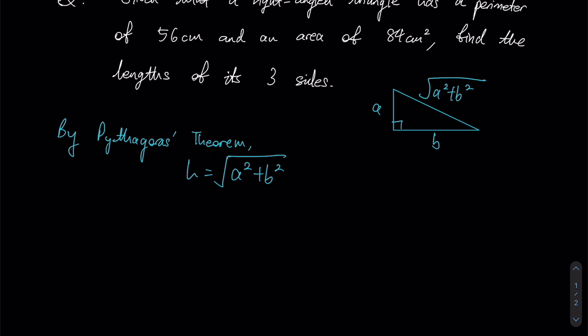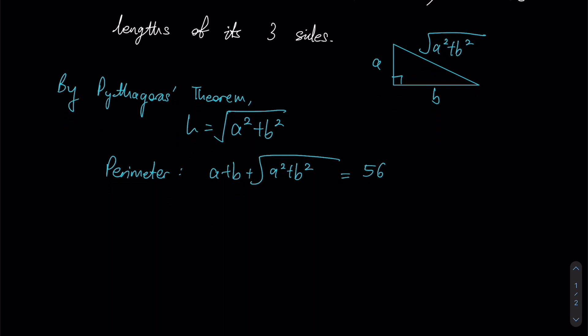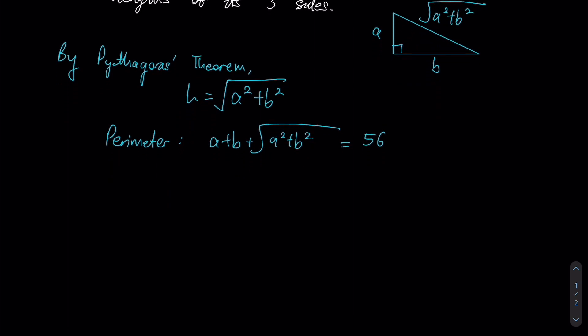So therefore we can craft two equations, one showing that the perimeter is 56, the other one showing that the area is 84. Our perimeter would be A plus B plus root of A squared plus B squared equals to 56. Unfortunately, the expression underneath our square root right now isn't a form that we can factorize. But if we do try to complete the square here, we can see that we'll get a form of A squared plus 2AB plus B squared. And then since we added a 2AB, we have to remove the 2AB to ensure the value stays the same.